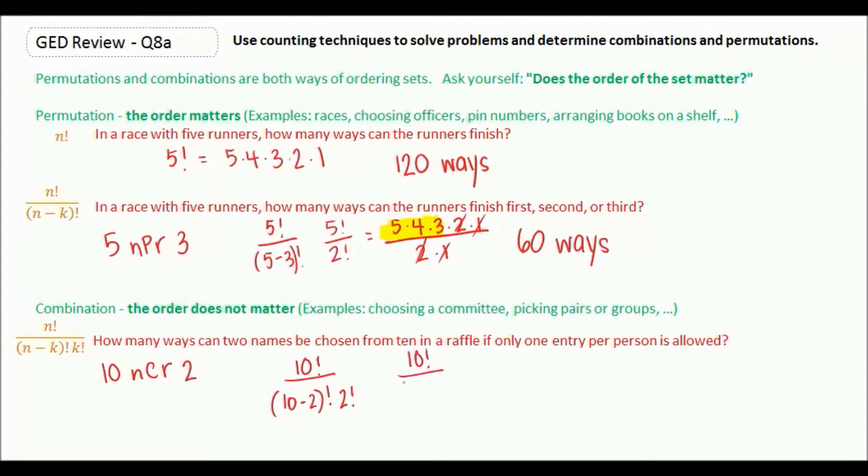That would be ten factorial. Ten minus two is eight. And now let's write it out. We have ten times nine times eight times seven times six times five times four times three times two times one, and then another two times one.